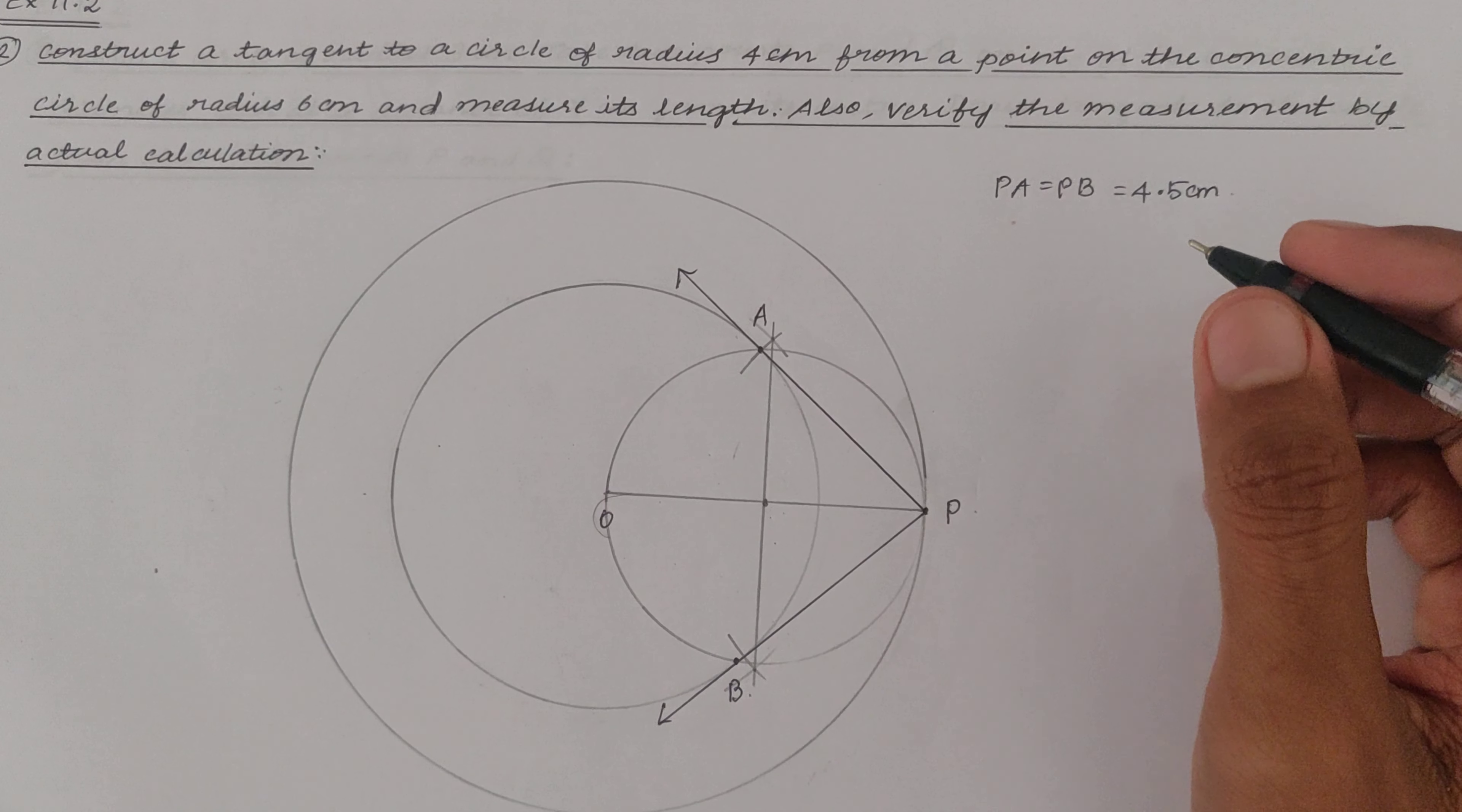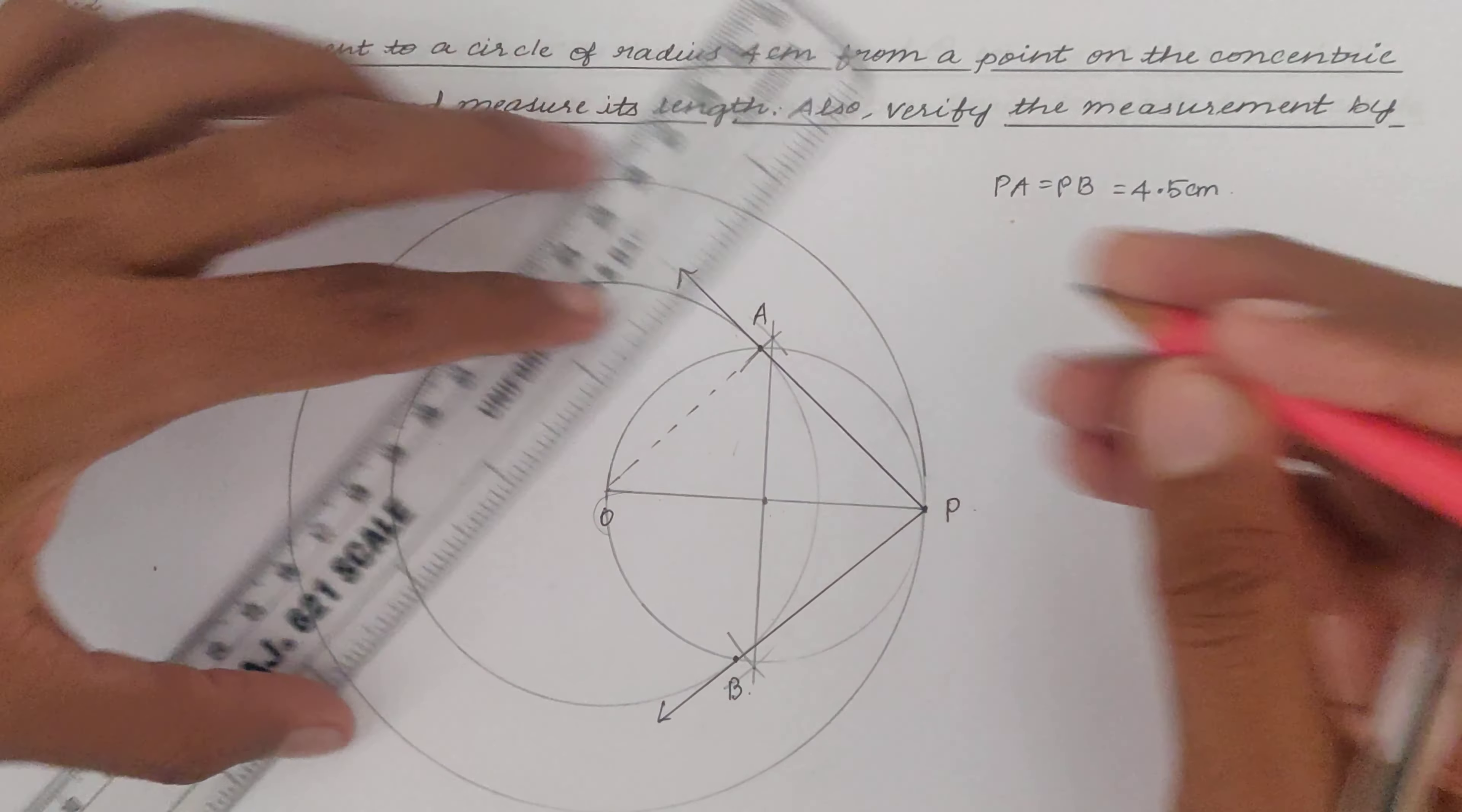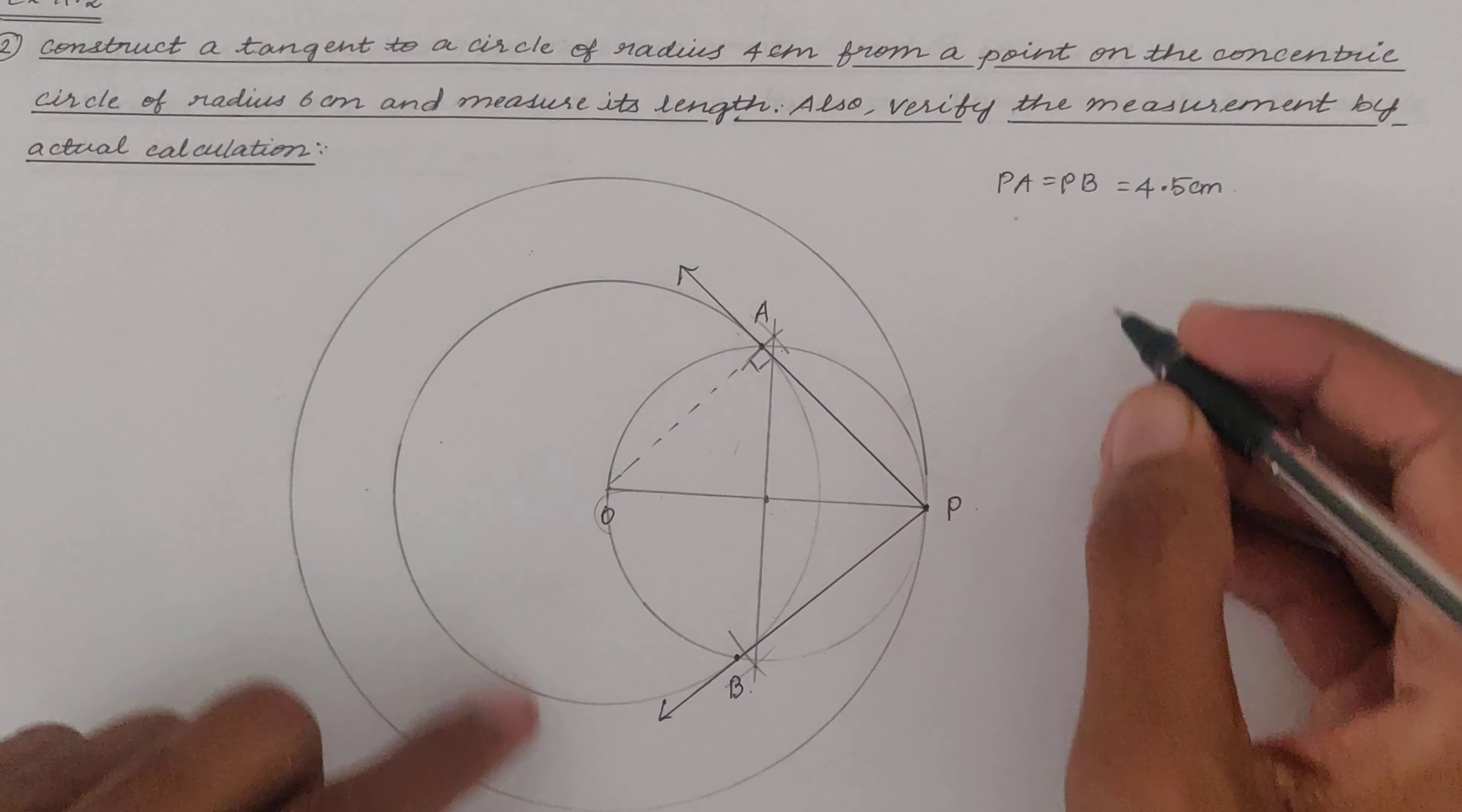Now let us verify whether what we have done is right. So what we have to do from one of the points of intersection, we have to join it to the center. Now we know that this angle will be 90 degree because we know that tangent and radius are perpendicular to each other.